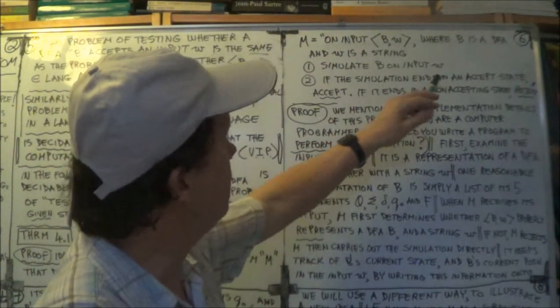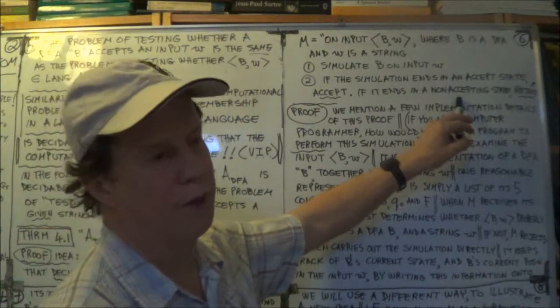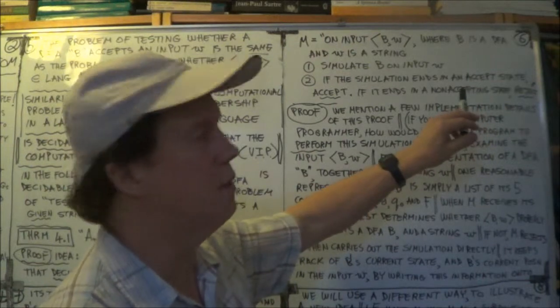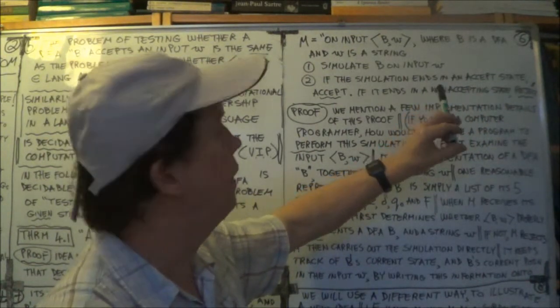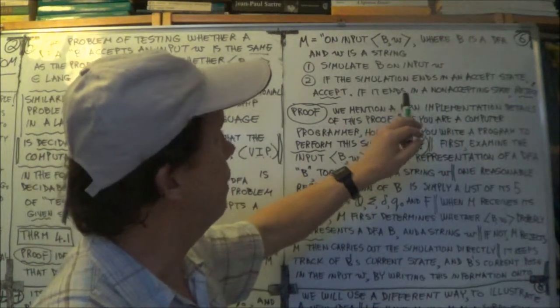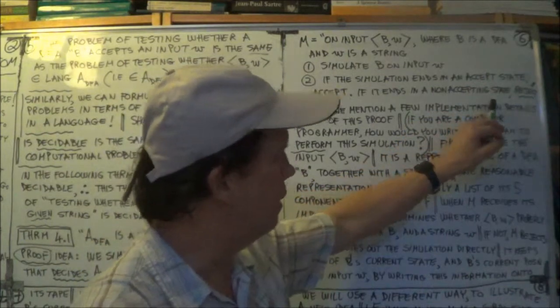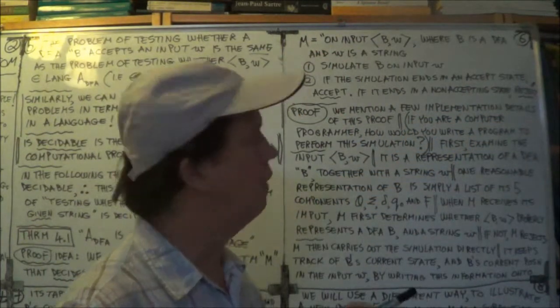And if B ends in a non-accepting state, so your final state is not belonging to big F, the set of accepting states, remember, go back, revision of DFAs. So if in the simulation B ends up in a non-accepting state, well, then the machine M will reject. Okay?